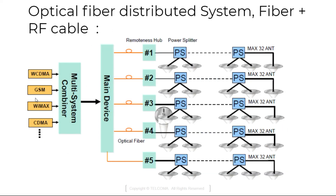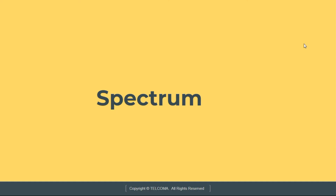This is the optical fiber distributed system — fiber plus RF cable — with remoteness, hub, power splitter, and different systems.